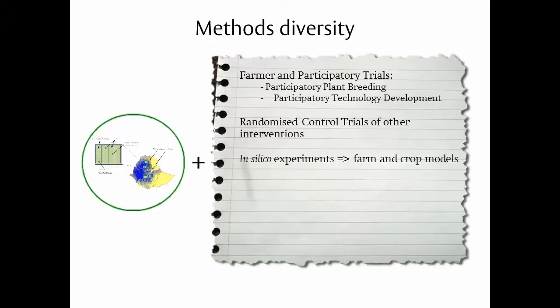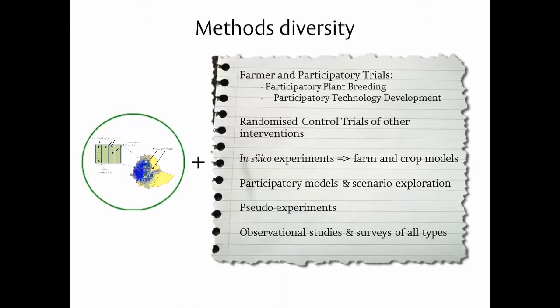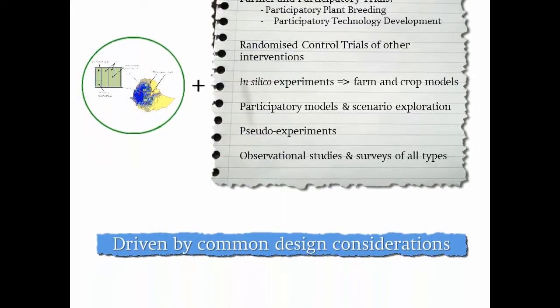For example, whole farm simulation models or crop weather simulation models. Modeling has also been combined with participatory research in the form of participatory modeling and scenario exploration. There are pseudo-experiments when we don't have full control over what is compared with what where. And the full range of observational studies and surveys of all types. Each of these will be most efficient at generating information for option-by-context interaction if the design principles are used.